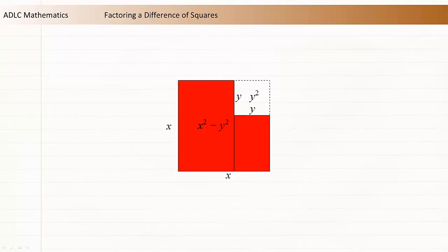We can split this area into two rectangles, one of which has a width of y. These rectangles both have a side length of x minus y, so we can rearrange them to form a single rectangle.